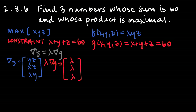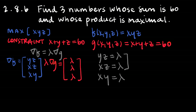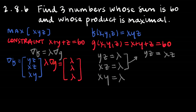If these two things are equal, then yz = λ, xz = λ, and xy = λ. Taking the first two equations and dividing them: yz over xz equals 1, because lambda over lambda equals 1, meaning yz = xz. Dividing both sides by z gives y = x. Going through the same process with the second and third equations gives z = y. Since y already equals x, all three must equal each other.